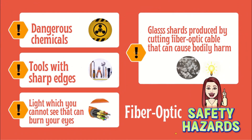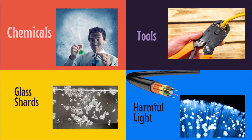Fiber optic safety hazards: fiber optic cables are useful for communications but they have certain hazards, including dangerous chemicals, tools with sharp edges, light which you cannot see that can burn your eyes, and glass shards produced by cutting fiber optic cable that can cause bodily harm. Chemicals, solvents, and glues used with fiber optics are dangerous. Handle them with extreme care, reading instructions on the label carefully. Also read the Material Safety Data Sheet that accompanies the chemicals to know how to treat someone in case of emergency.